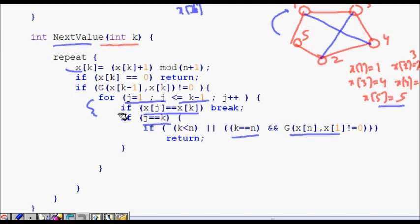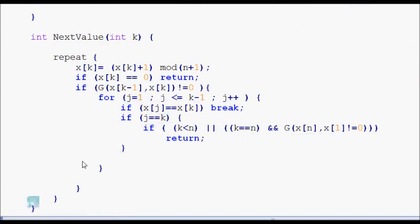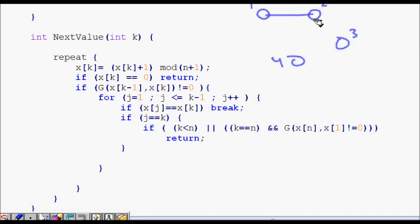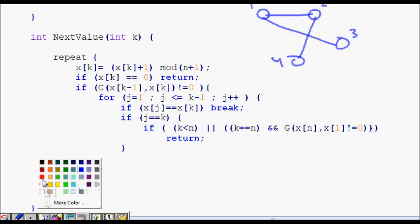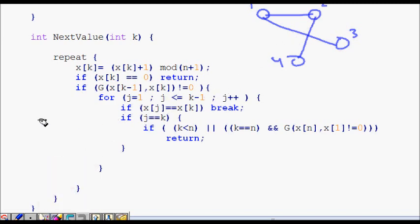Now we will try to run this. Let's try to run for one example where we might also have some backtracking. This is node 1, 2, 3, 4. It's like this. Now let's try to see if we can find some Hamiltonian cycle.